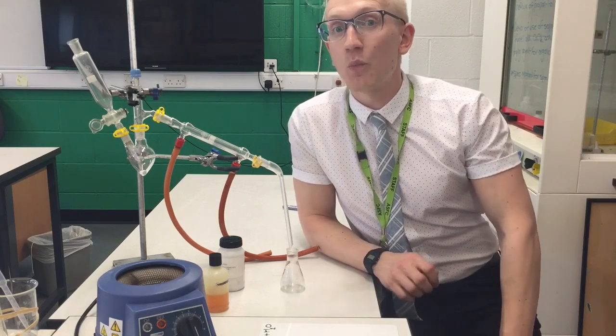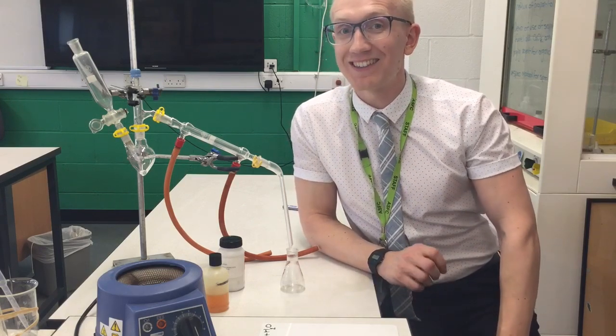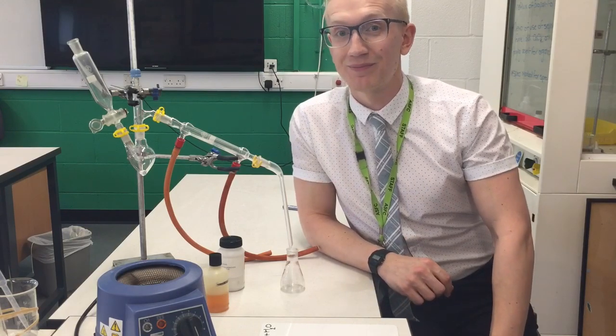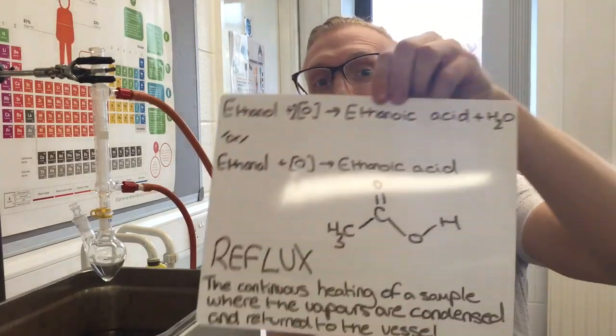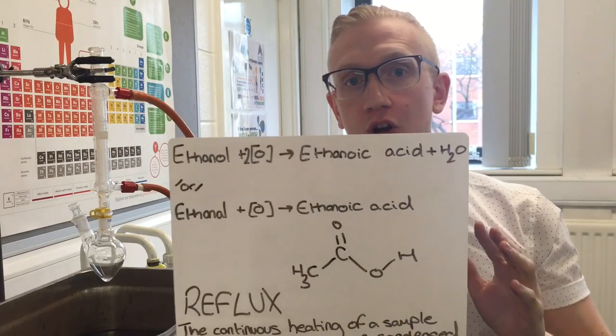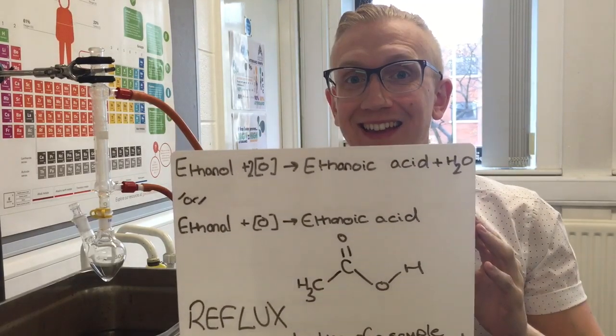Next I'm going to go through why you might use a reflux instead of a distillation and the benefits of that. For a reflux, I'm either trying to get a primary alcohol to become a carboxylic acid, or the aldehyde — perhaps the one just made in the distillation — to become a carboxylic acid. It works for either of them.